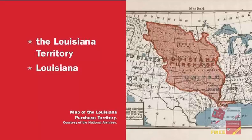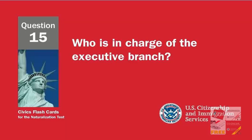What territory did the United States buy from France in 1803? The Louisiana Territory. Louisiana. Who is in charge of the executive branch? The President.